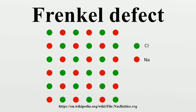For example, consider a lattice formed by X and M ions. Suppose an M ion leaves the M sub-lattice, leaving the X sub-lattice unchanged. The number of interstitials formed will equal the number of vacancies formed.